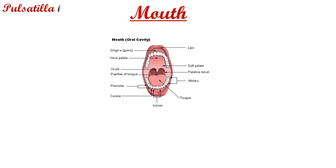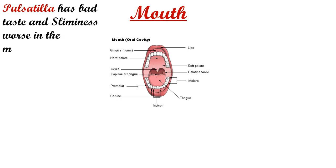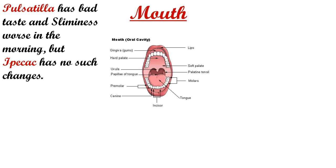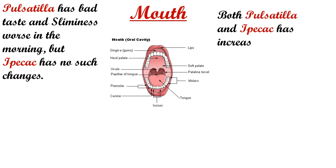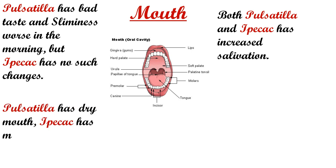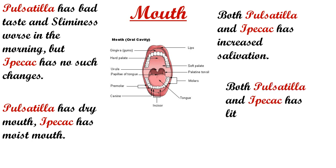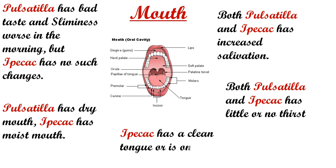There is great variation in the taste of Pulsatilla and Ipecac. Pulsatilla has bad taste and sliminess, especially in the morning, while Ipecac has no such changes. Both Pulsatilla and Ipecac have increased salivation; however, Pulsatilla has dry mouth and Ipecac has moist mouth. Both have little or no thirst. The tongue is clean or only slightly coated in Ipecac.